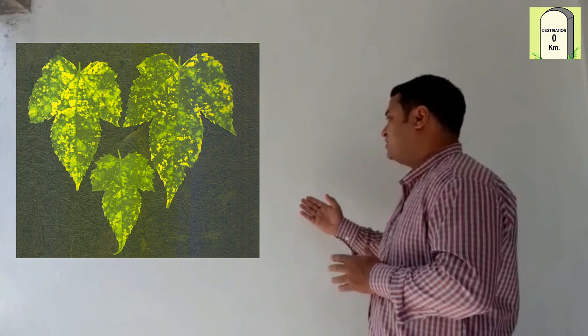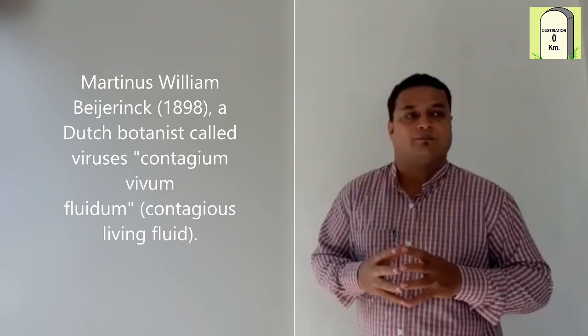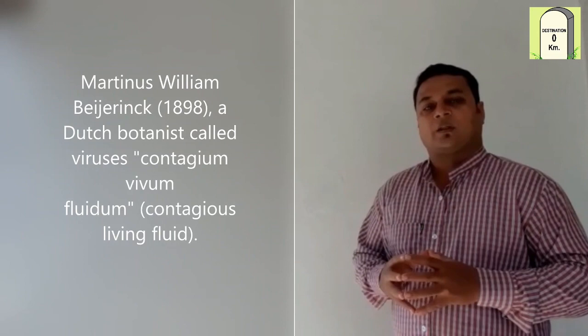In 1898, Martinus William Beijerinck again infected tobacco leaves. He found that when this sap was applied on fresh leaves, it was able to infect the fresh leaves also. He called this fluid contagium vivum fluidum, which means contagious living fluid.